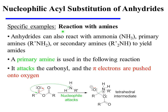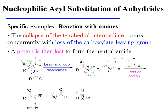Finally, anhydrides can also react with amines — more broadly, with ammonia, primary amines, or secondary amines. In all cases, amides will be formed as the product. A primary amine is used in the generic example shown here. It attacks one of the two carbonyl carbons of the anhydride, pushing pi electrons onto oxygen, forming yet another transient tetrahedral intermediate. The collapse of this tetrahedral intermediate occurs concurrently with the loss of the carboxylate leaving group. Finally, a proton is lost so as to form a neutral amide as the ultimate product of this reaction.